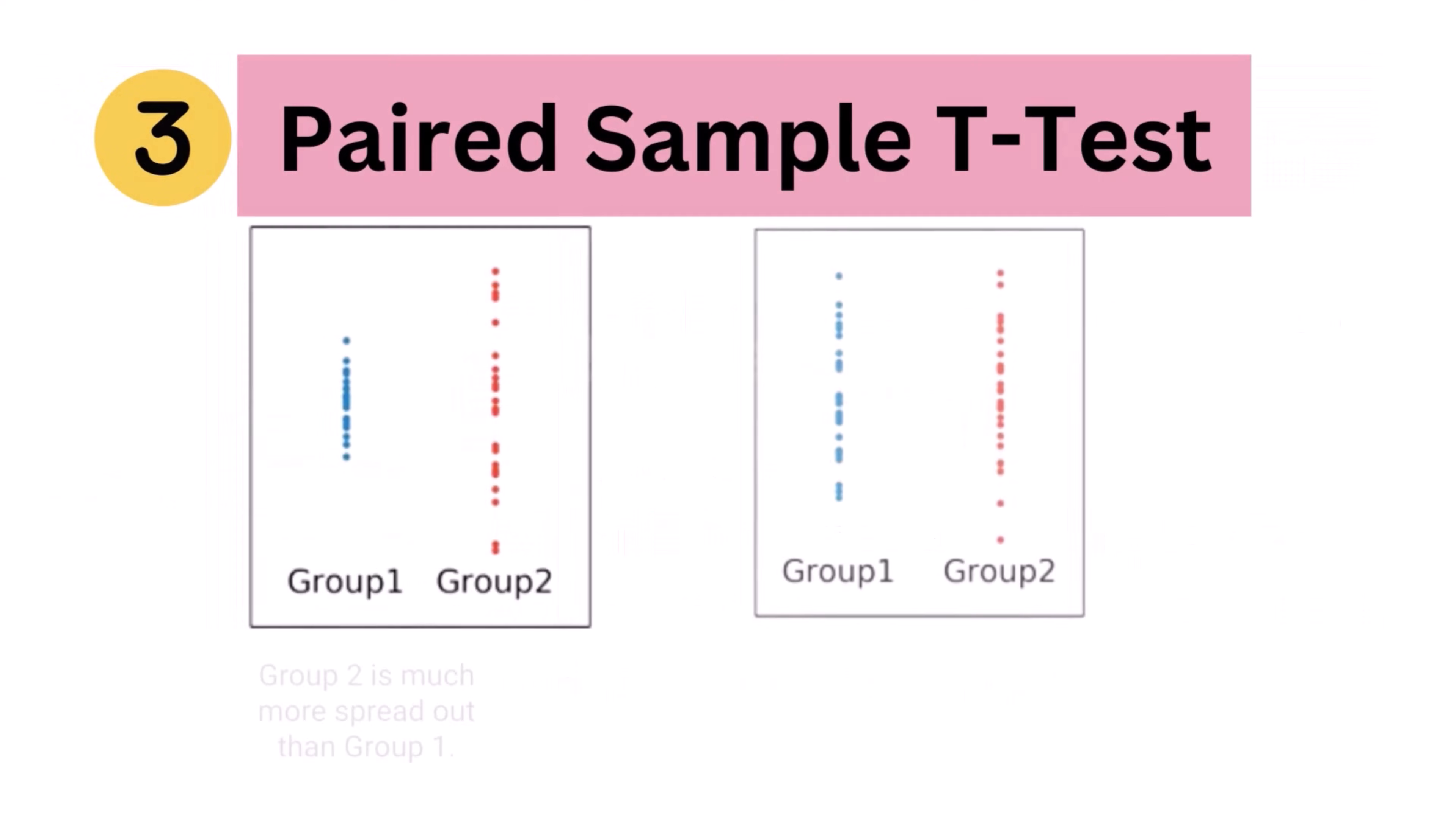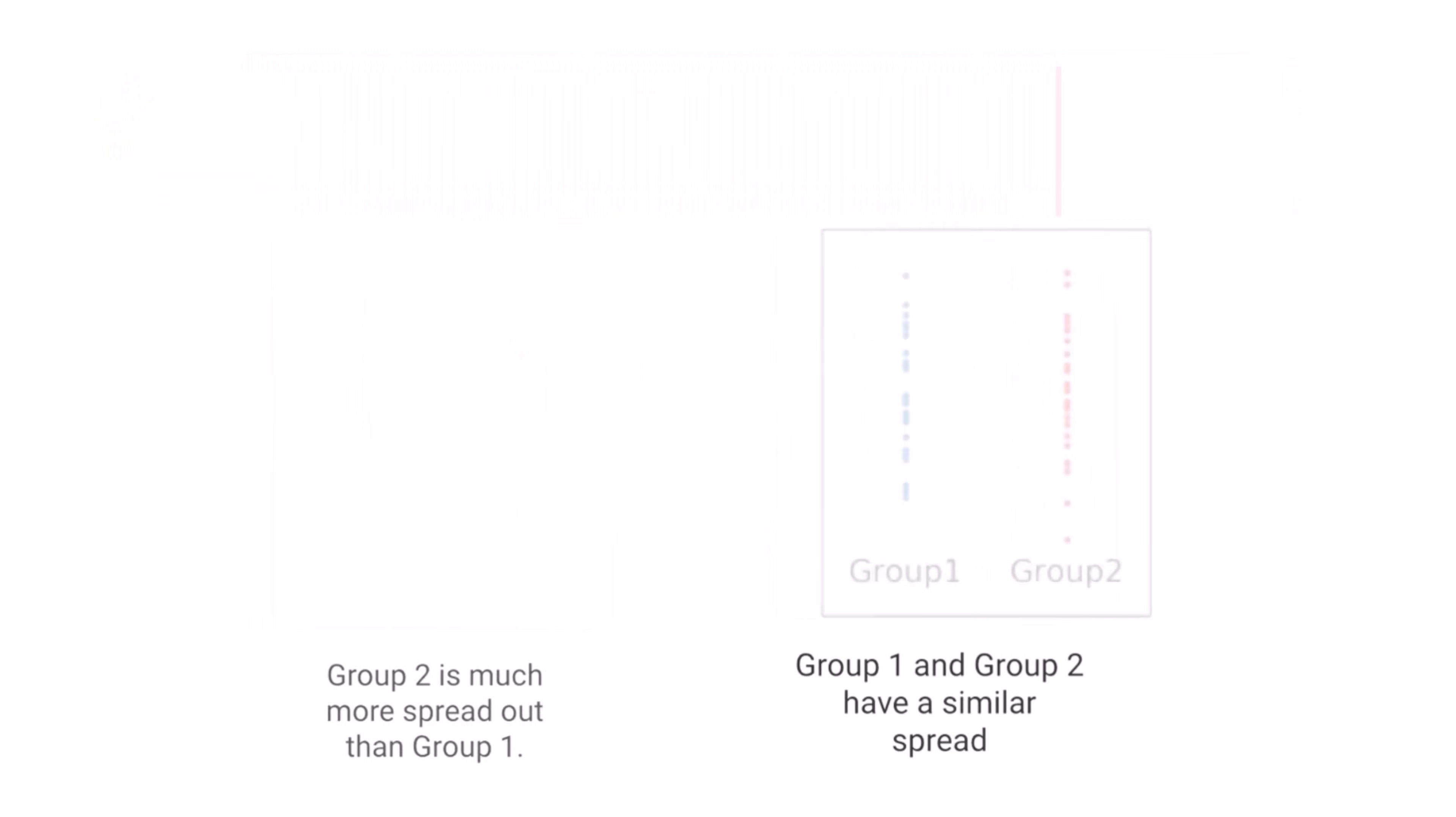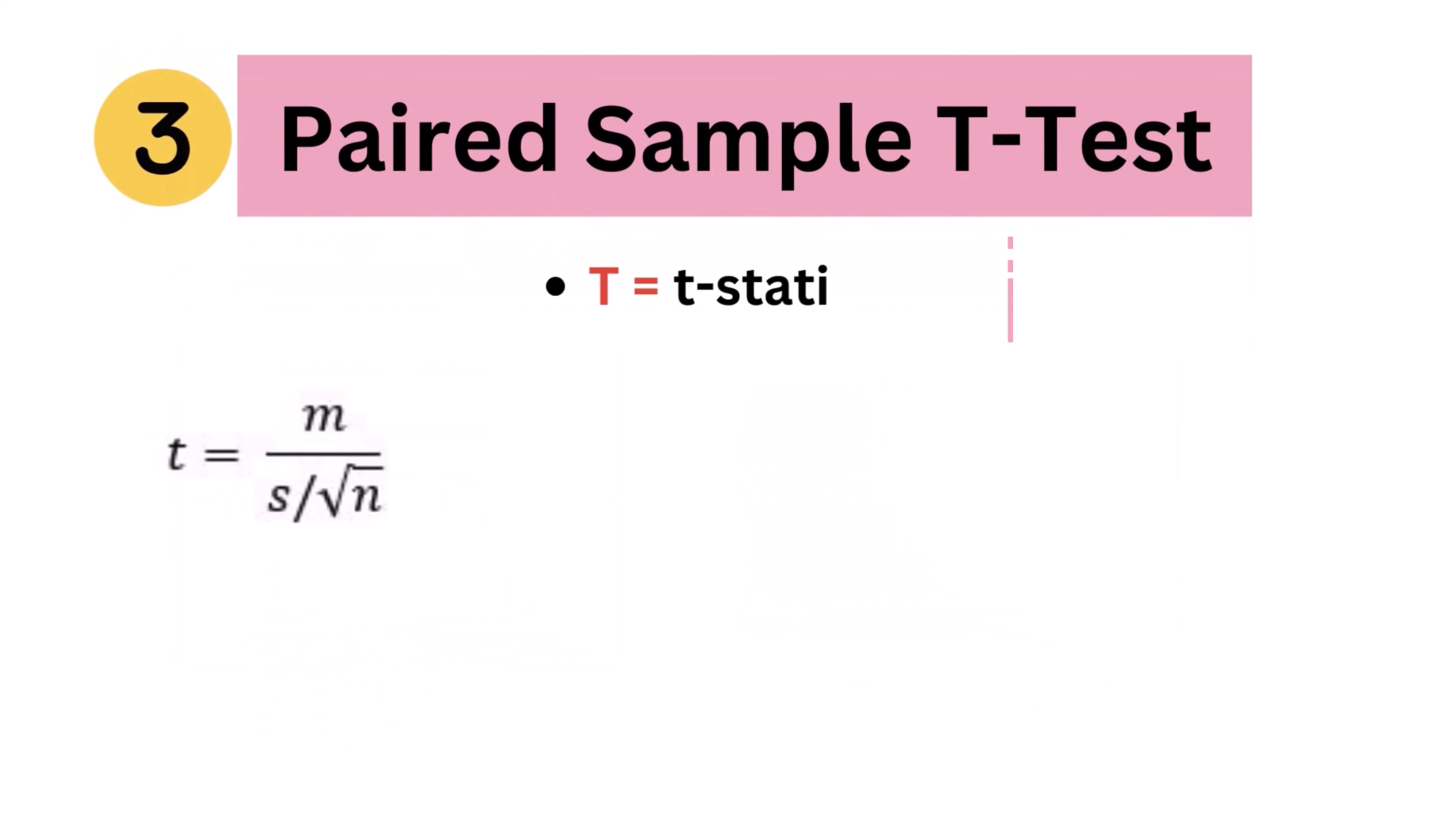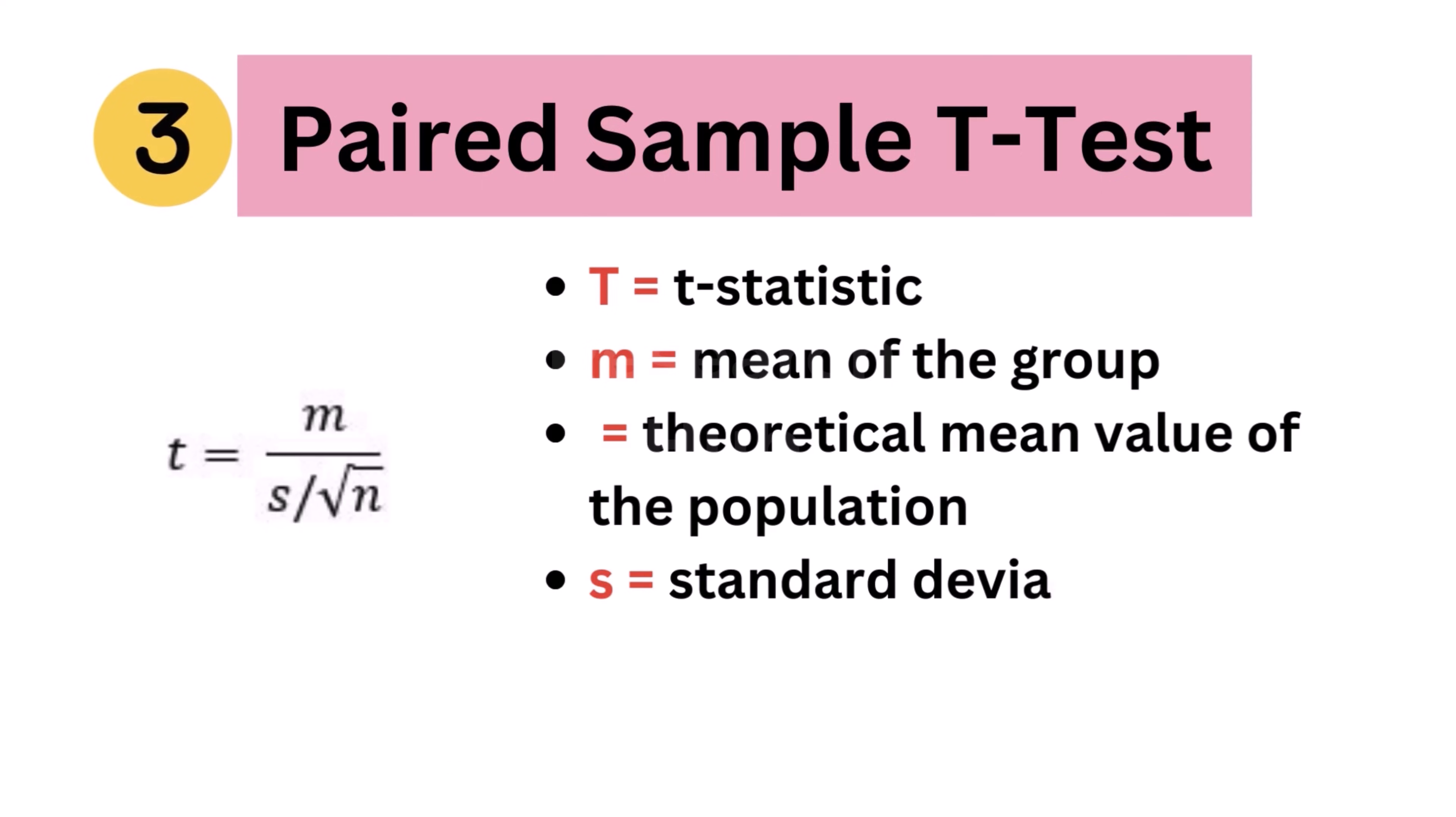This hypothesis testing is conducted when two groups belong to the same population or group. The groups are studied either at two different times or under two varied conditions. The paired samples t-test is a statistical test used to determine if two paired groups are significantly different from each other on your variable of interest. Your variable of interest should be continuous, be normally distributed. The formula used to obtain the t-value is...